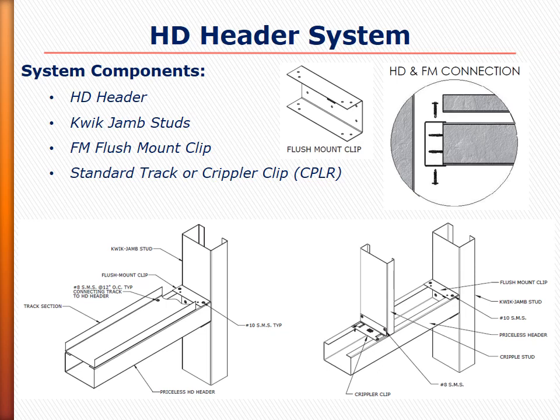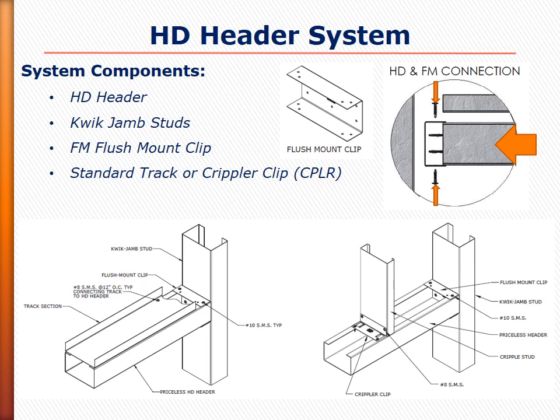The HD header system includes the one-piece HD header, the quick jam stud, the flush mount clip for the header-to-jam connection, and either a standard piece of track or the crippler clip to receive the cripple studs. The flush mount clip and crippler clip are only used with the HD header. You can see the crippler clip attaching the cripple studs above the opening to the HD header, as opposed to a standard track section assembly.